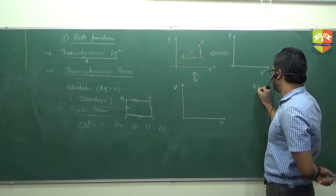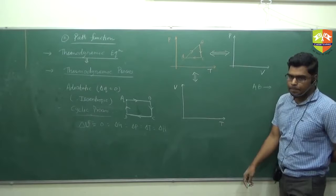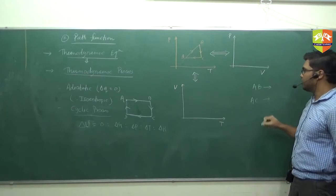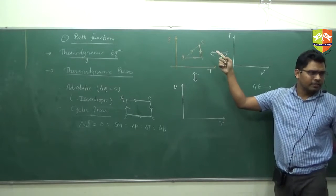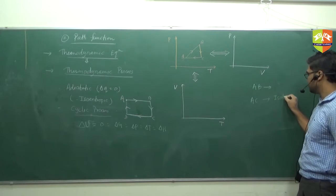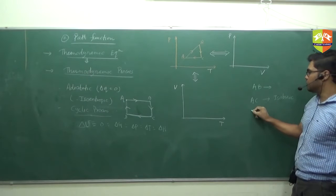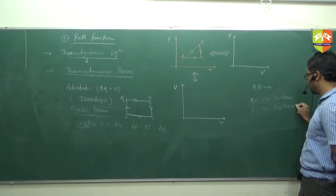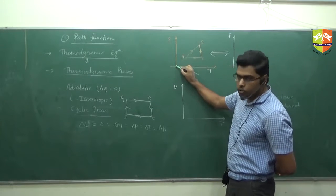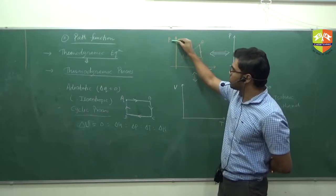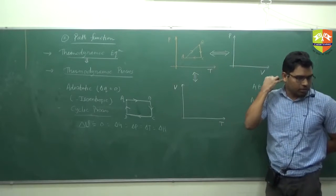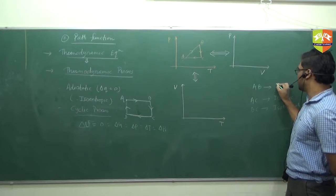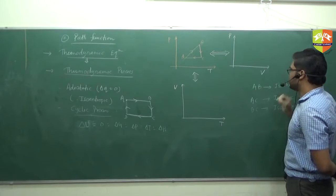From this graph, can you tell me what process is A to C? Constant pressure — isobaric, right? It is isobaric. What is B to C? Isothermal. Then what is A to B? Isochoric. Because you see, this graph is a straight line touching the origin — a PT graph at constant volume passes through the origin. So A to B is isochoric.